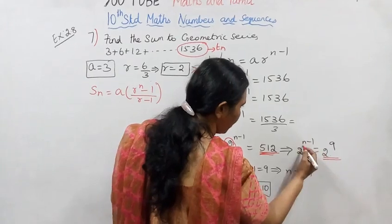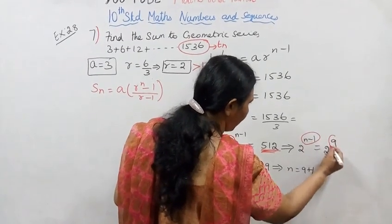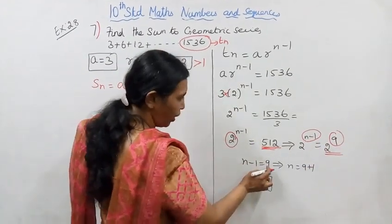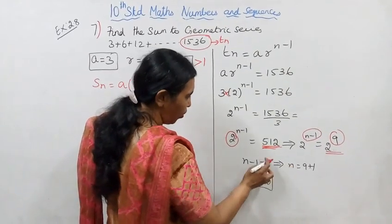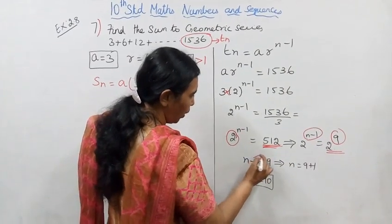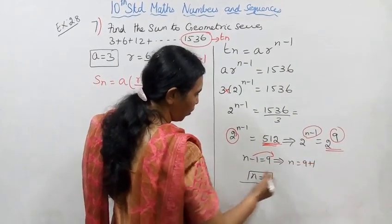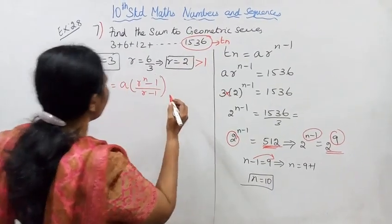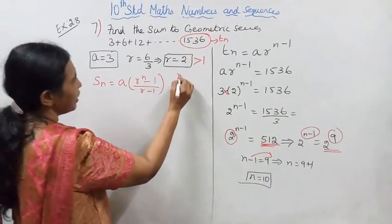Since the bases are equal: n minus 1 equals 9. Then n minus 1 equals 9, so n equals 9 plus 1, which gives n equals 10.